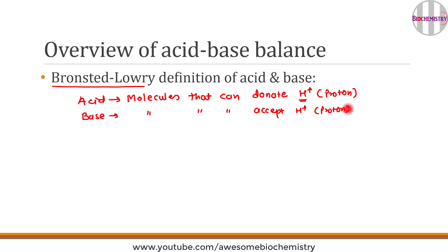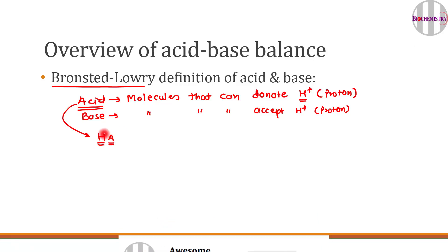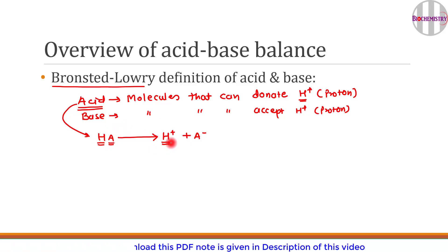Based on this definition, we can prepare a generalized model for an acid, represented by HA, where H represents the hydrogen atom and A represents its associated anion. When HA undergoes dissociation in solution, it splits into H⁺ and A⁻, donating H⁺ ions into the solution.